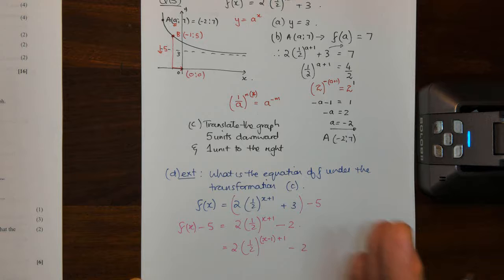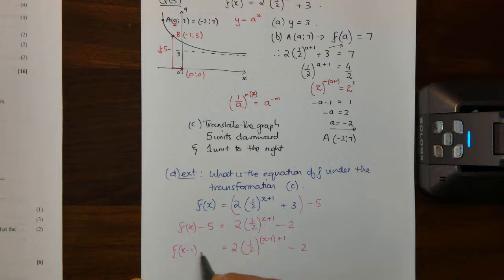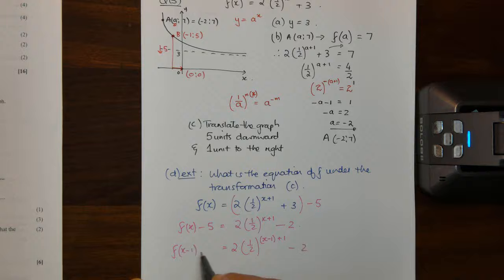So if you move to the right one unit, you subtract one with the X's. So this will be F of X minus 1 minus 5, so that will then become two times a half to the power of X minus 1 plus 1 is X minus 2. So under that transformation you have the equation of your new graph.